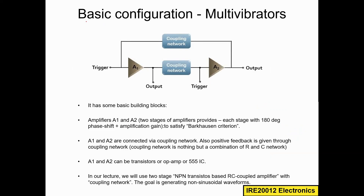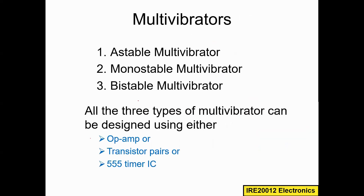This is the basic configuration of any multi-vibrator. It has basic building blocks: A1, A2, coupling network one, and coupling network two. We give a trigger input and get the output from amplifier stage one or stage two. These amplifiers A1 and A2 can be either an operational amplifier, transistor pairs, or a 555 timer IC.